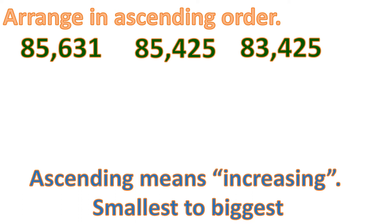So you have to compare the numbers by its place values. Say if you're comparing the 10,000th place, you must compare all the 10,000th place digits of the numbers. In this case, all numbers have digits in the 10,000th place, and unfortunately they are all the same. So we cannot compare them using this place value.